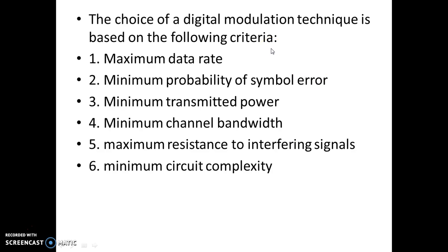The choice of a modulation technique is based on the following six criteria. It should have a maximum data rate — we always need a maximum data rate. There should be minimum probability of symbol error; in order to have efficient communication, the error should be minimum. Also, a minimum transmitted power — we need devices that will transmit information using minimum power, as power is a limited resource.